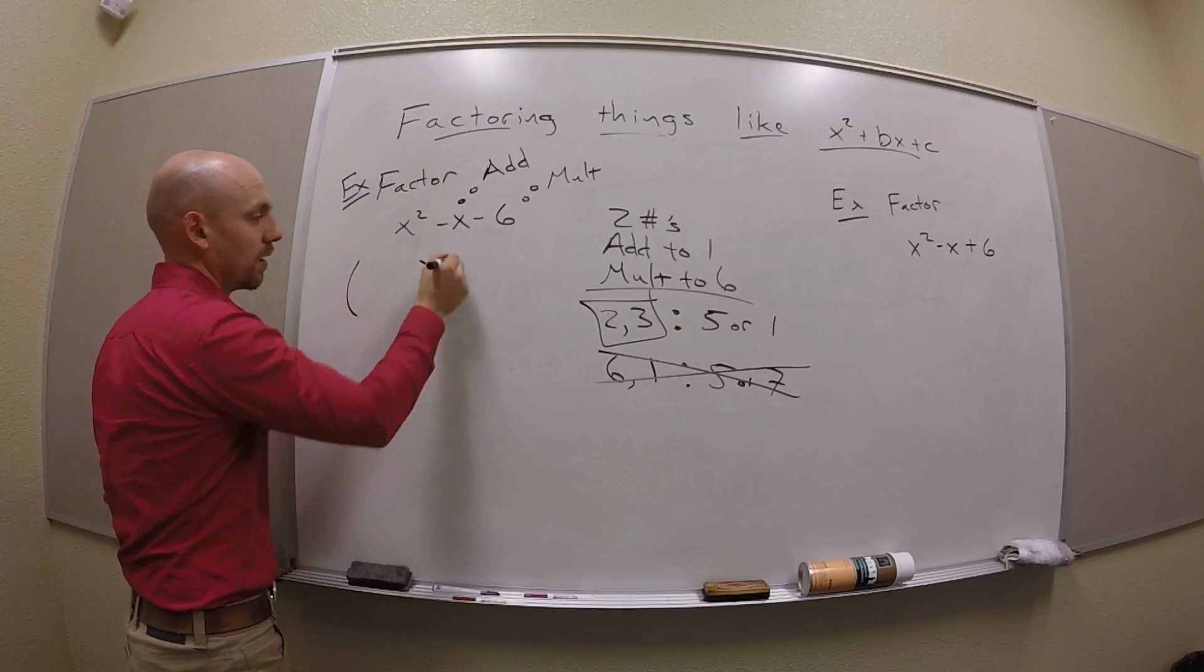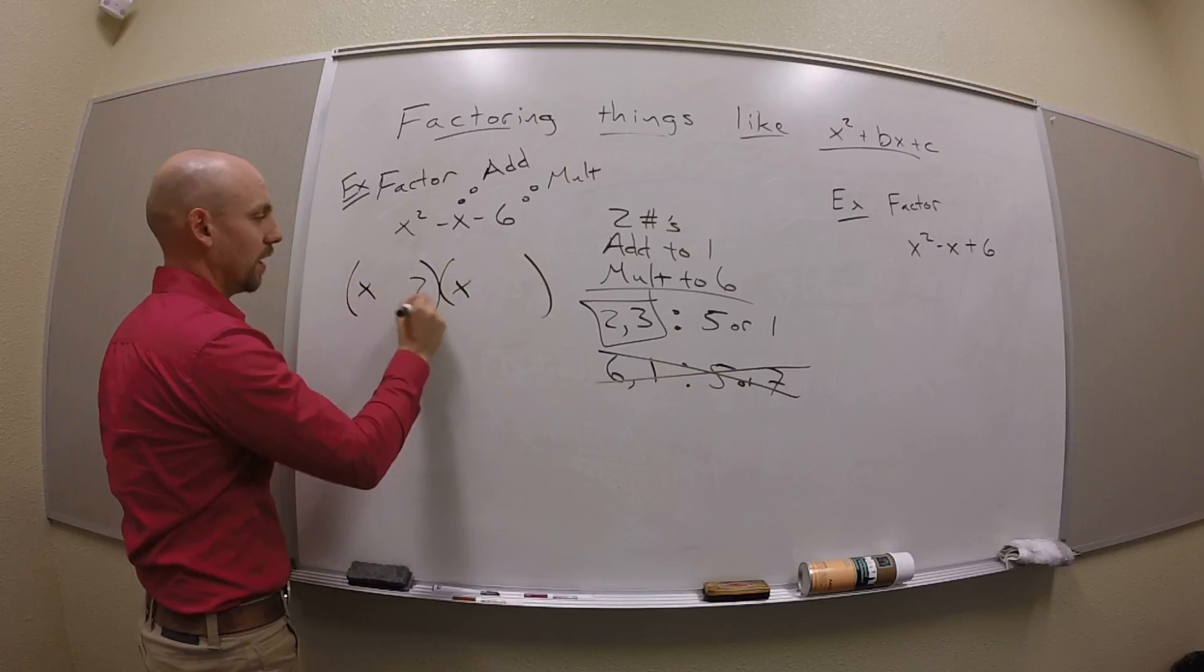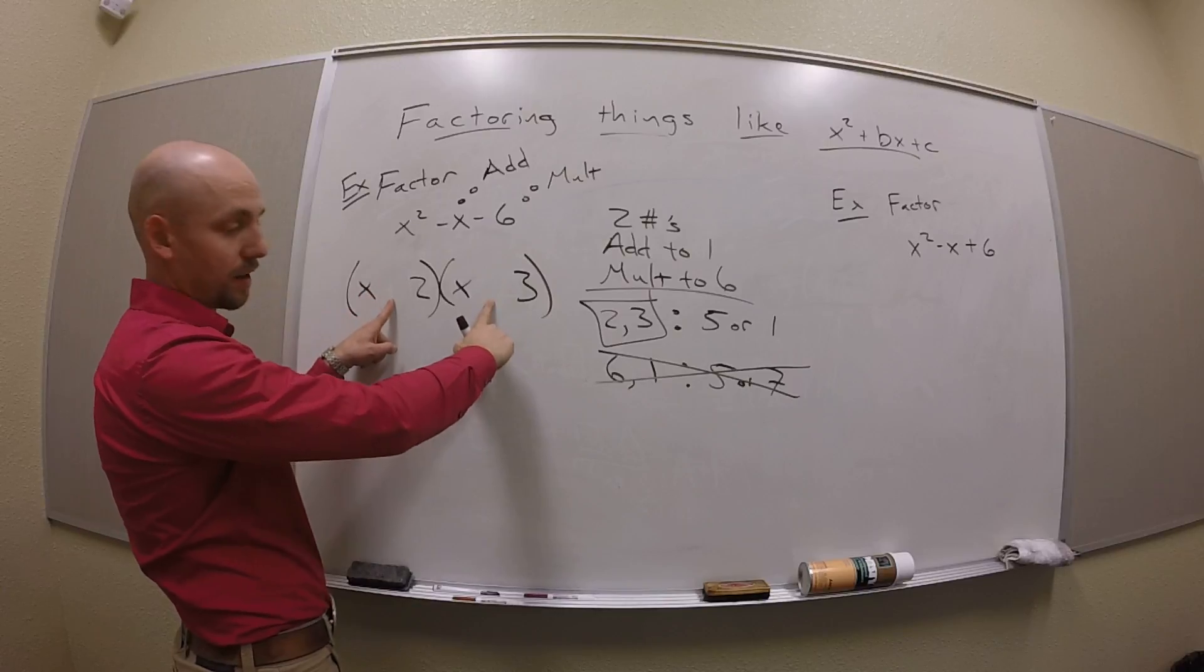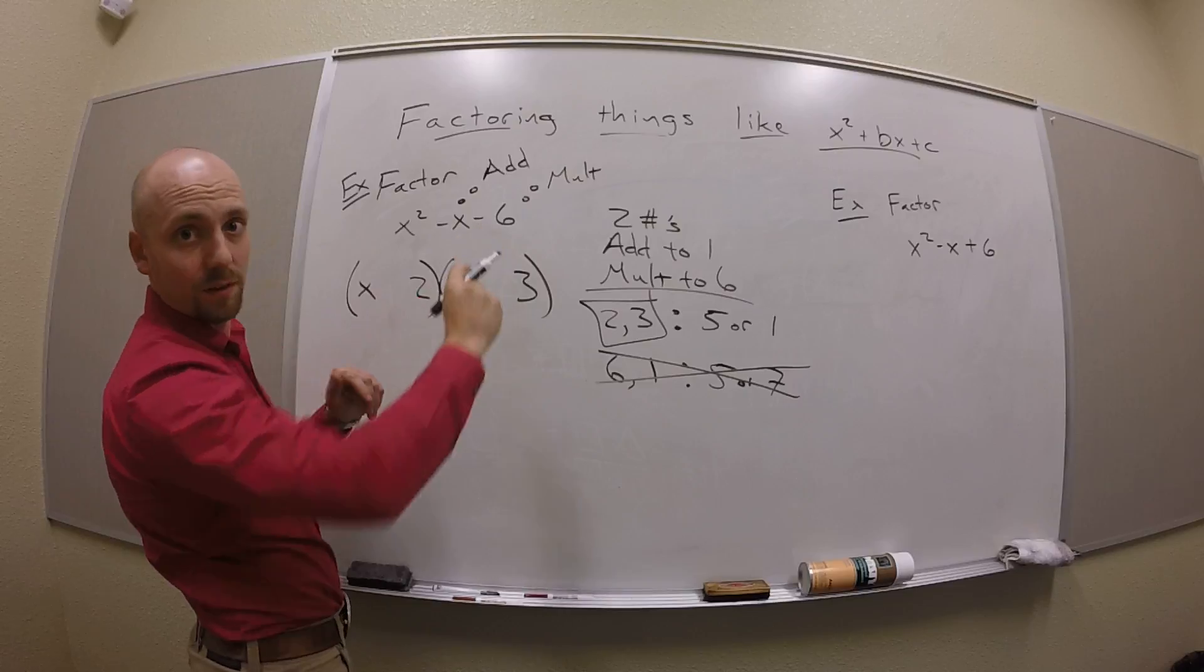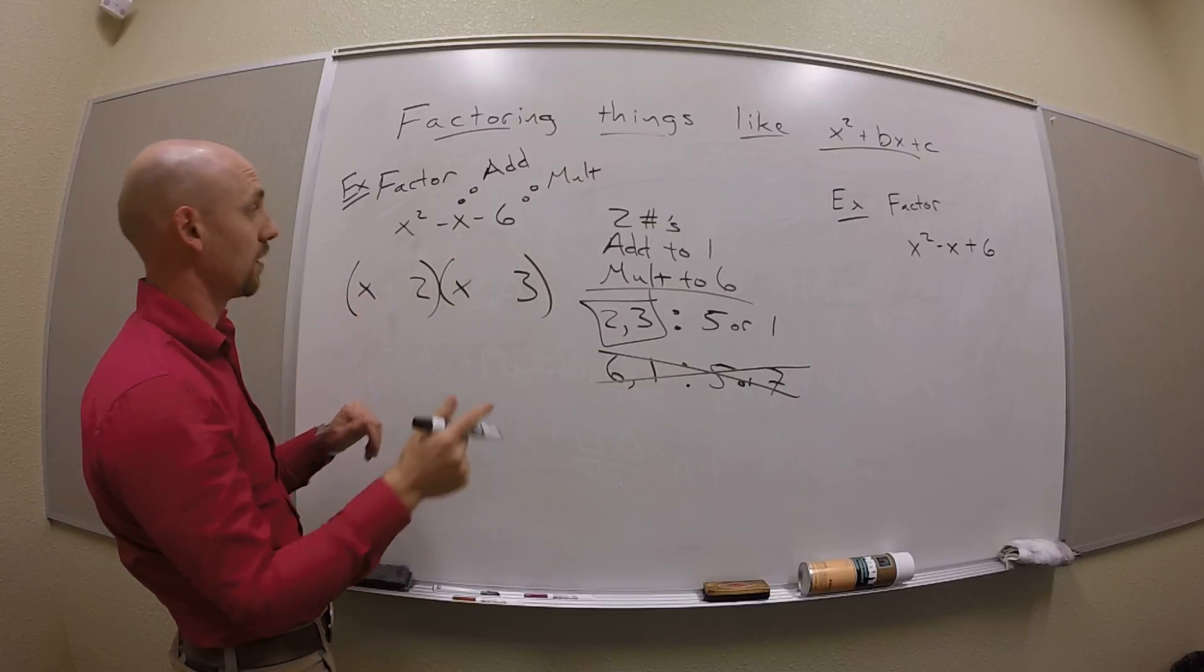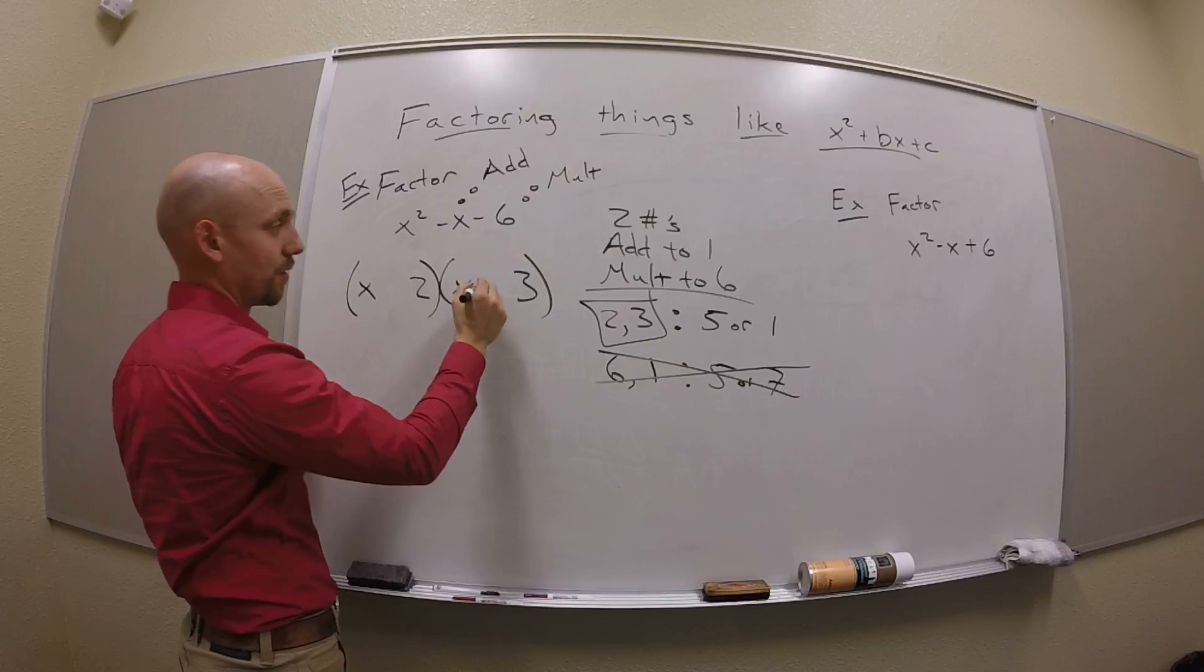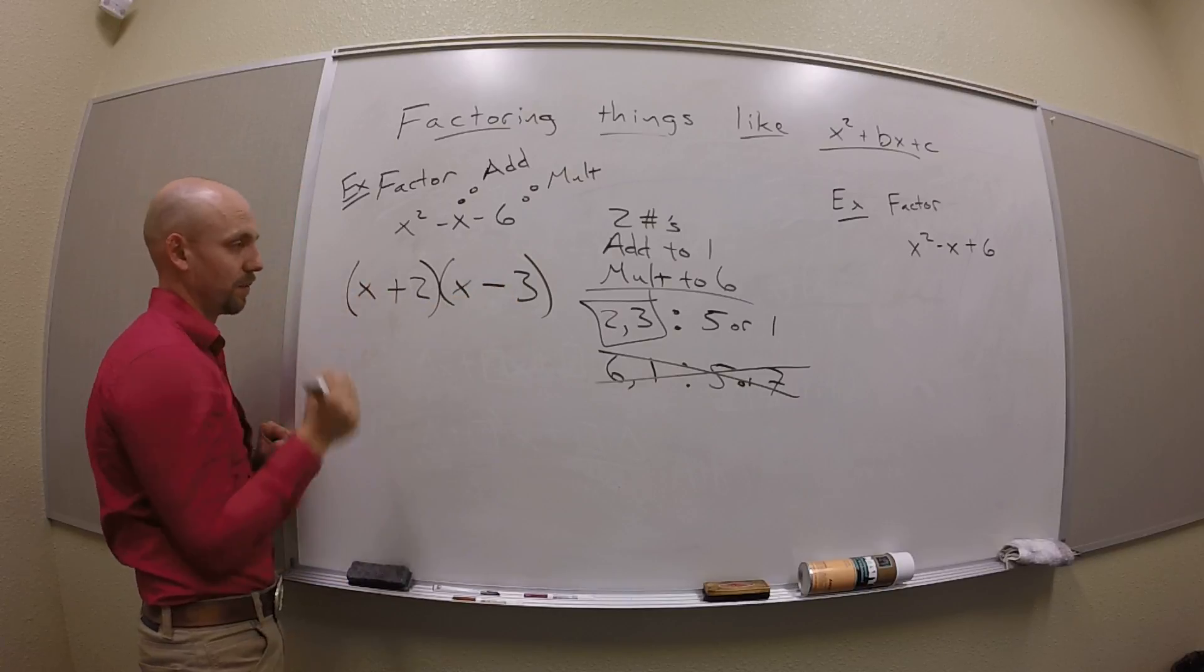So then I go, okay, I'm going to fit these into my form. So there's an x, a 2, and a 3, and now I need to decide on signs here. So I need them to multiply together to be something negative. That means the signs have to be opposite. And I need them to add to negative x, so the bigger one, the 3, has to be negative, and the 2 has to be positive.